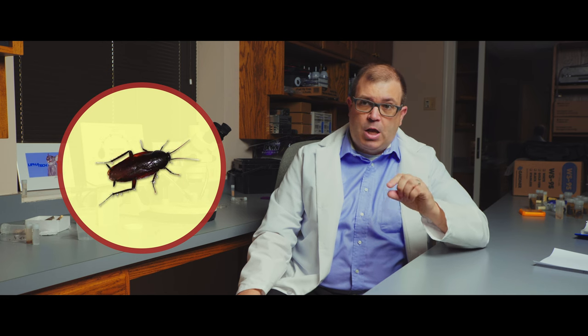Orientals are a little bit smaller, probably closer to that inch mark. They're going to be a very dark brown to black in color. And a lot of them don't have wings. It depends on the male or female aspect of it. The smoky browns are about the same size as American, but they've got a very mahogany brown color to them.